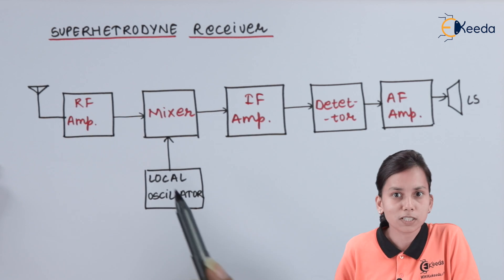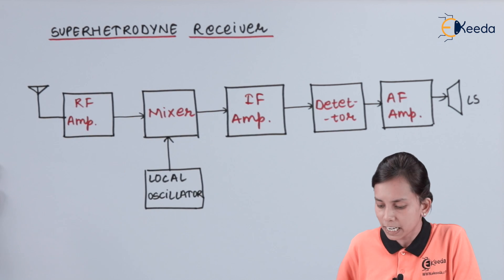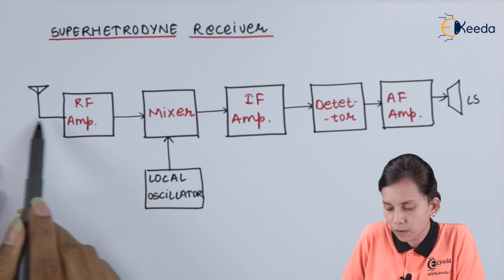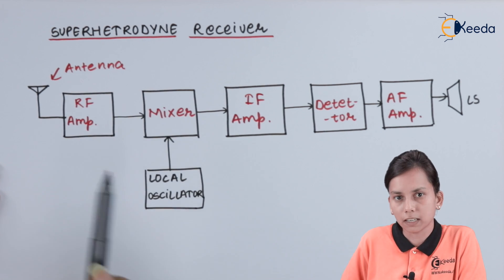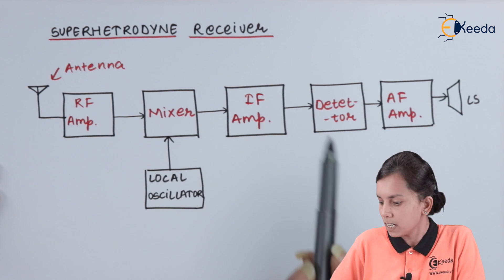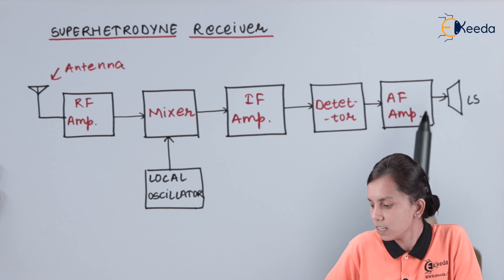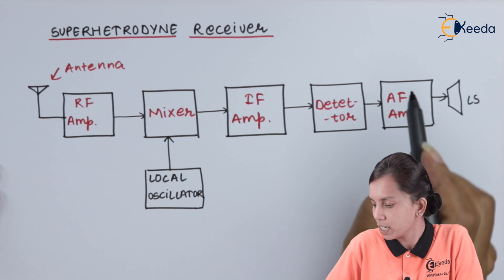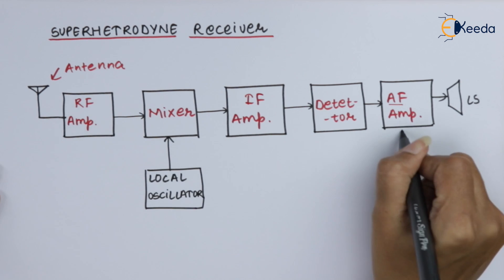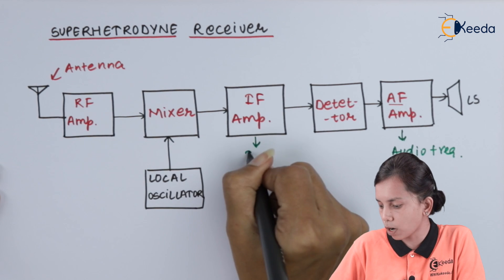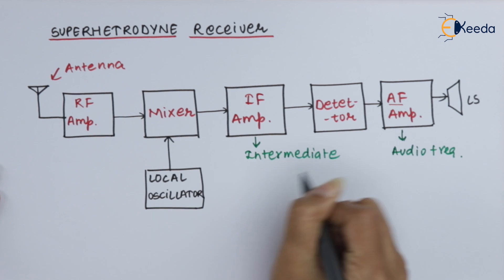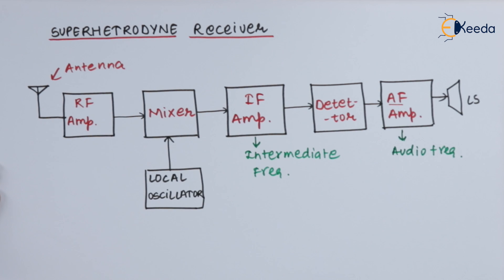Let us look at the block diagram of the Super Heterodyne first, then we will discuss it one by one. This is the block diagram of the Super Heterodyne Receiver. It consists of an antenna, RF amplifier, mixer, oscillator, then IF amplifier, detector, AF amplifier, and loudspeaker. AF amplifier stands for audio frequency amplifier, and IF stands for intermediate frequency amplifier.